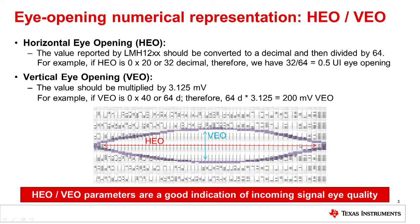The value of HUE is reported in hex format. This should first be converted to decimal and then divided by 64 to get a percentage of eye opening. For example, if the HUE value is 0x20, this would be 32 decimal, and 32 divided by 64 gives us 50% horizontal eye opening.